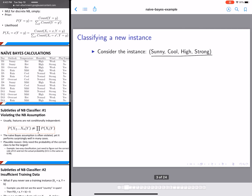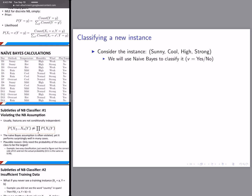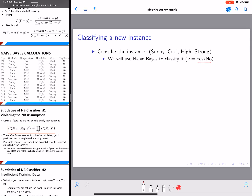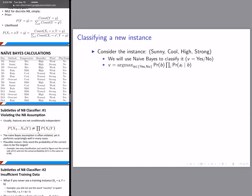The first step is to identify our features and our target or class variable. We have yes or no as our two predictions, and outlook, temperature, humidity, and wind are our features. Sunny, cool, high, and strong are their respective values that we are going to use to predict this instance using Naive Bayes.